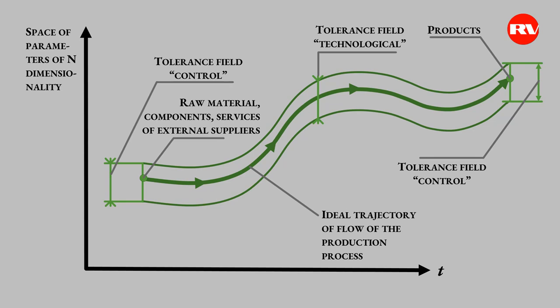And in this case, you find yourself free from the need to control every product by one or another means of technical control. The production process itself, its organization and technological discipline, which the personnel must follow in the implementation of the production process, work for quality.